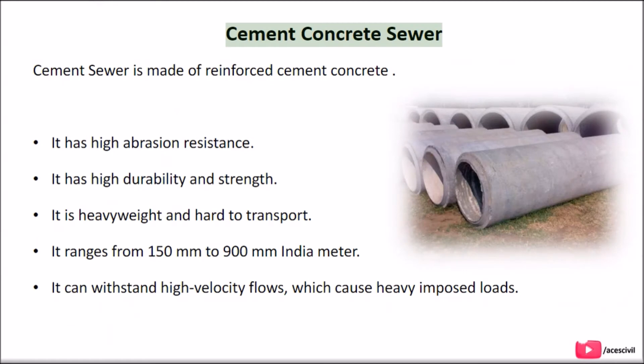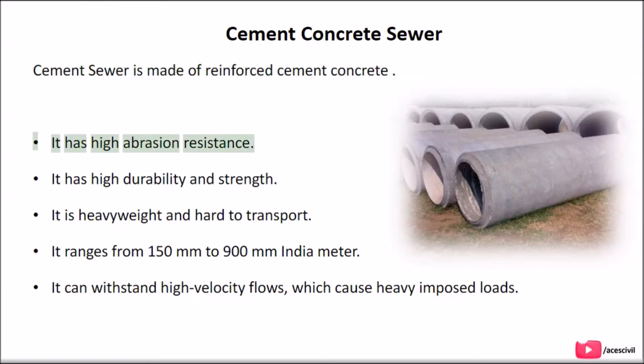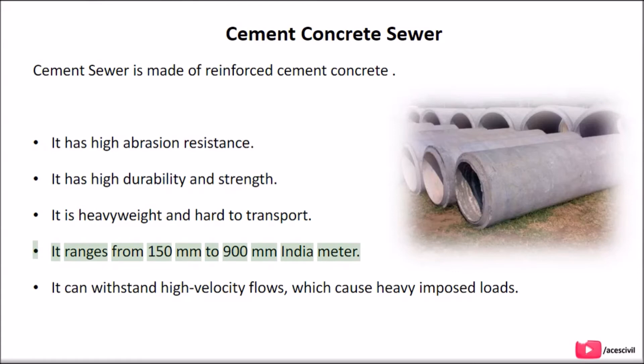The internal lining needs to be done to make the interior smooth and corrosion resistant. Cement Concrete Sewer: Cement sewer is made of reinforced cement concrete. It has high abrasion resistance, high durability, and strength. It is heavyweight and hard to transport. It ranges from 150 mm to 900 mm in diameter, and it can withstand high velocity flows which cause heavy imposed loads.